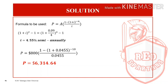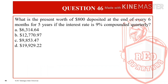Once we have determined the value of I, we can now find the present worth. Substituting: A = $800 × (1 − (1 + 0.0455)^(−10)) / 0.0455. The exponent is −10 because there are 2 semi-annual periods per year × 5 years. The answer is $6,314.64, so letter A for question number 46.